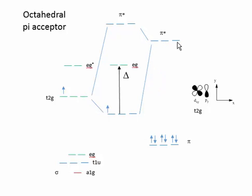Instead, and this diagram maybe doesn't reflect it beautifully, is that they will interact with the pi-star. So those would be like the LUMO on the ligand.